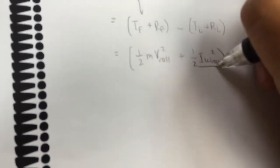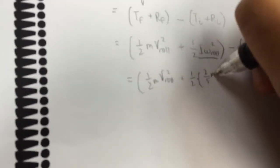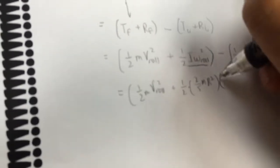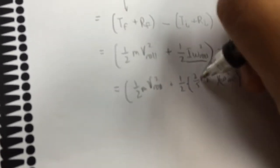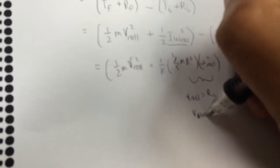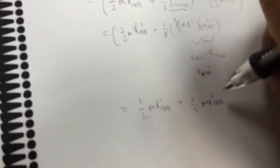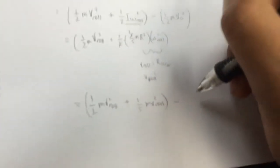So because of the rolling constraint, we can simplify this. So we have 1/2 mv_roll² plus 1/2 times 2/5 mr² times omega_roll². So this simplifies to 1/5. But the thing with this is that because we know that v_roll is r omega_roll, then this quantity becomes v_roll². So we're left with 1/2 mv_roll² plus 1/5 mv_roll² minus 1/2 mv_0². Finally, we can simplify this to 7/10 mv_roll² minus 1/2 mv_0².